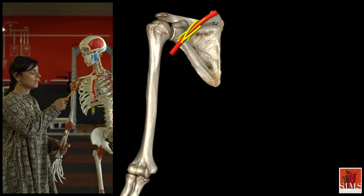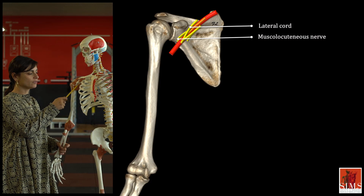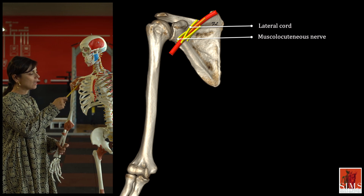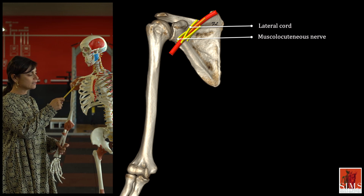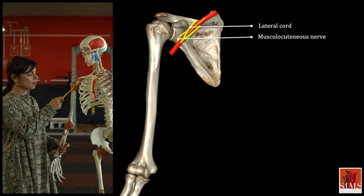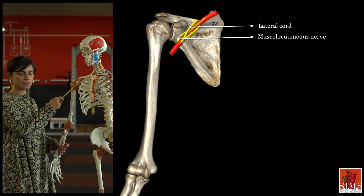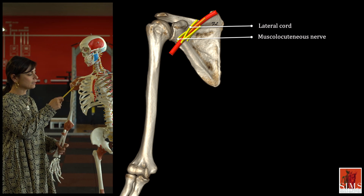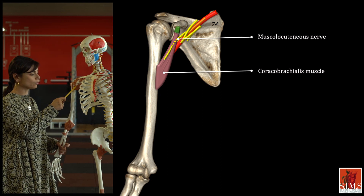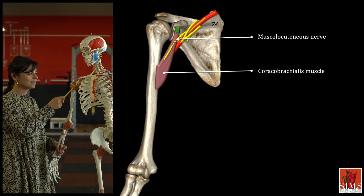The musculocutaneous nerve arises from the lateral cord of the brachial plexus. It's located in the axilla, lateral to the median nerve and axillary artery, medial to the coracobrachialis muscle and anterior to the subscapularis muscle.